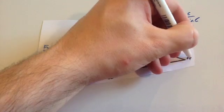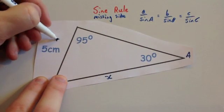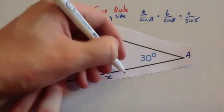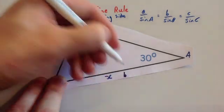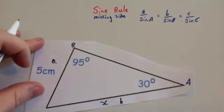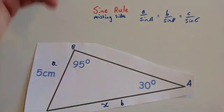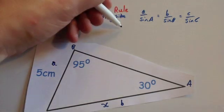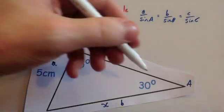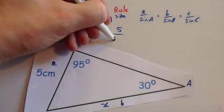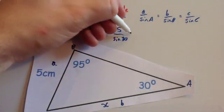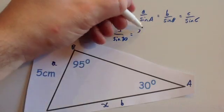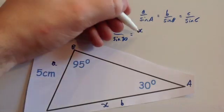So we've got capital A and little a, and capital B and little b. Let's substitute those into the formula: a over sin A equals b over sin B. So little a, 5, divided by sin 30, would equal b, which is x, divided by sin 95.